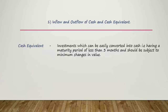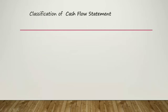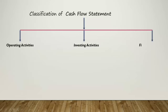Now let's look at how to prepare a cash flow statement. In order to prepare it as per Accounting Standard 3, you need to know about three activities that happen in a business: operating activities, investing activities, and financing activities. Cash flow from each of these activities is calculated separately, and at last they are combined to find the net increase or decrease in cash flow of a business.